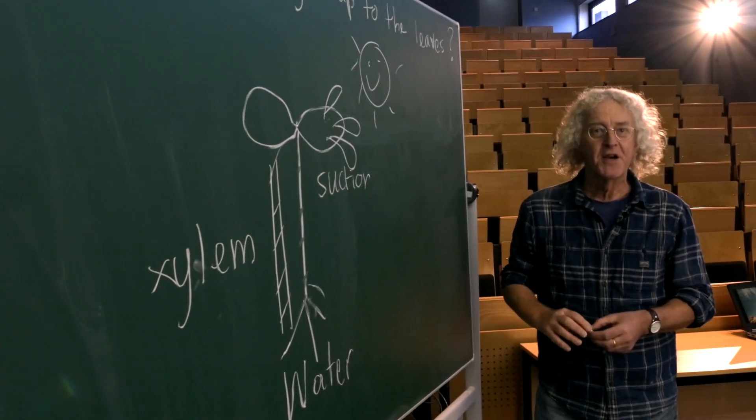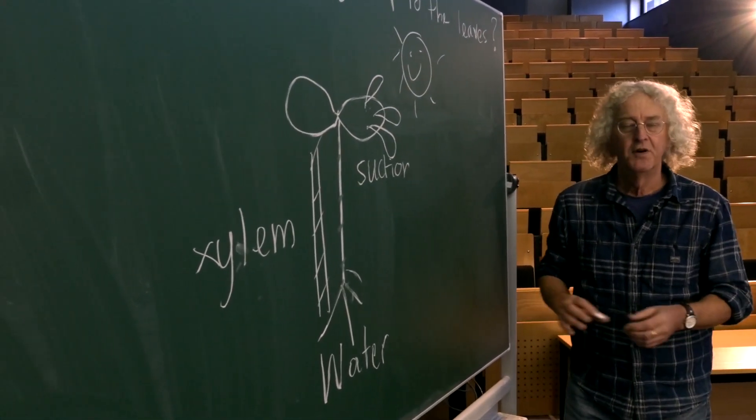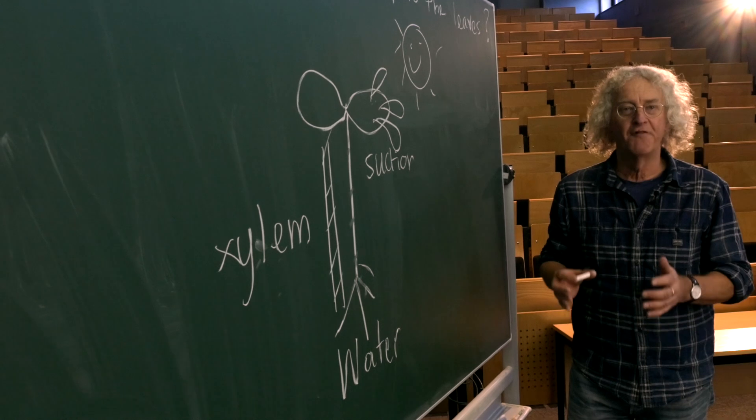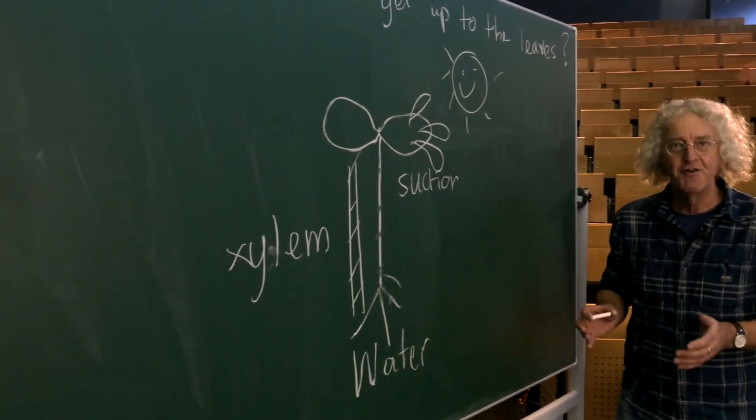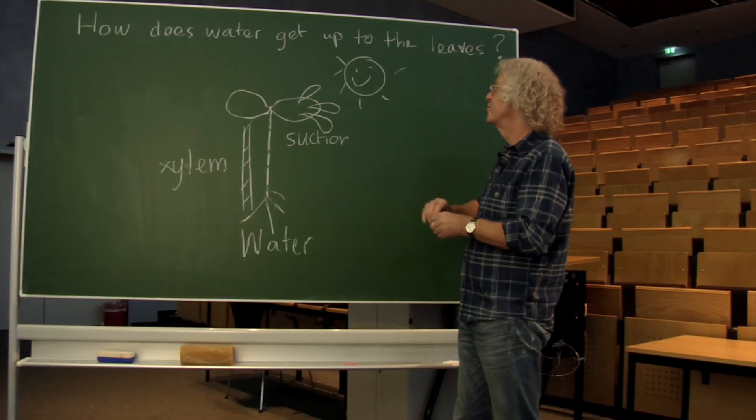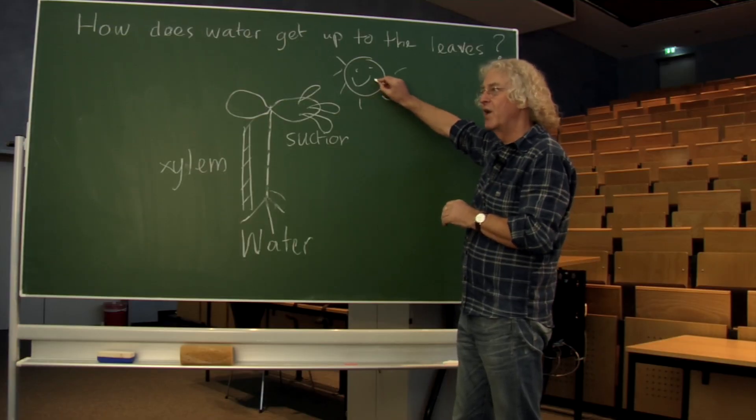This, in a big tree, they move several crates of beer equivalents of water to the top of the tree every day. And this is all done by solar energy.